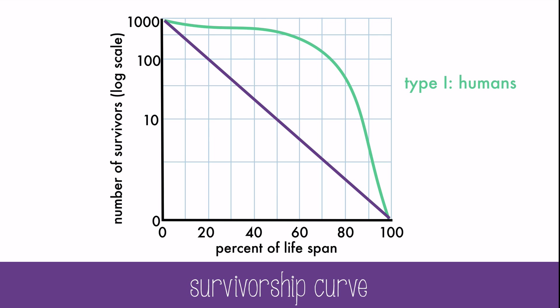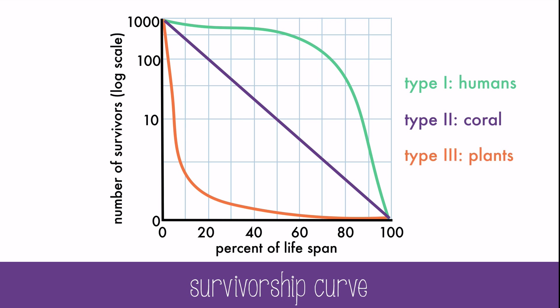In the Type 2 survivorship curve, there's a constant death rate throughout the lifespan. An example of this would be coral. Type 3 survivorship curves have many young, most of which will die at a very young age. An example would be plants.